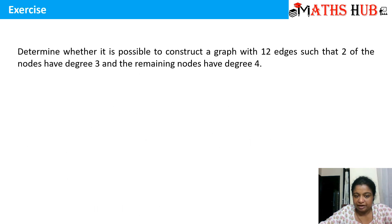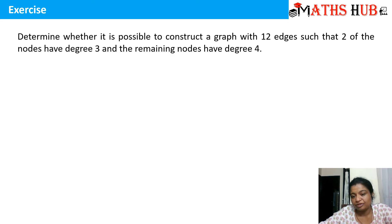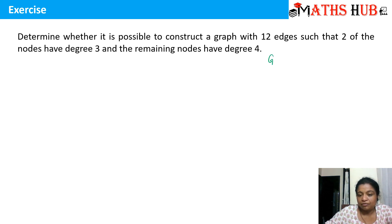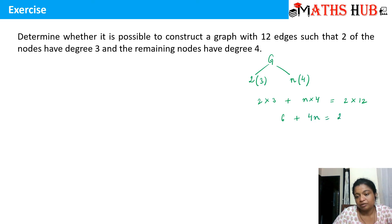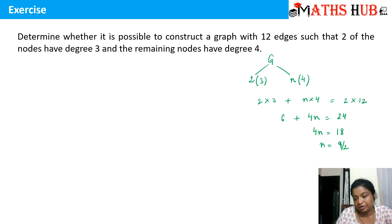The final exercise asks: is it possible to construct a graph with 12 edges such that 2 nodes have degree 3 and the remaining N nodes have degree 4? Applying the handshaking lemma: (2×3) + (N×4) = 2×12, giving 6 + 4N = 24, so 4N = 18, and N = 9/2 = 4.5. Since the number of nodes cannot be fractional, such a graph is impossible to construct.